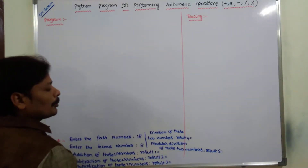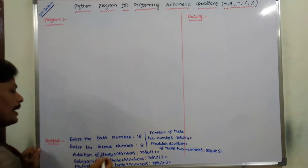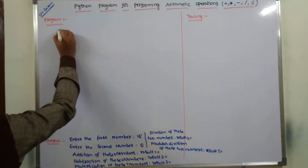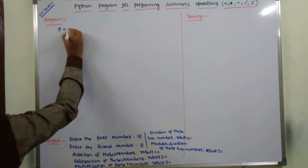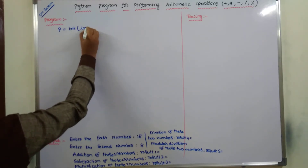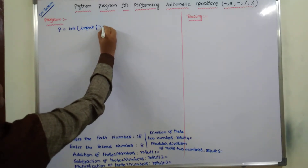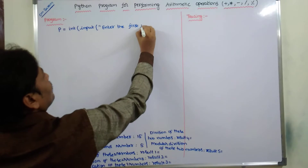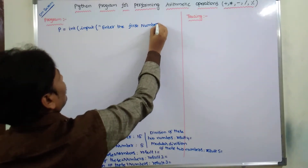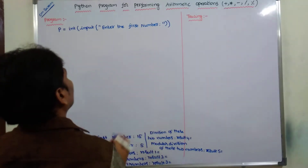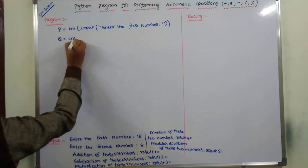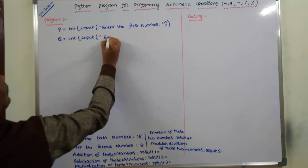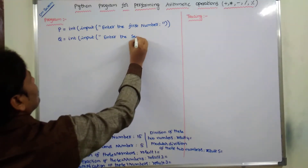Whenever I am tracing the program, I am writing the result. According to the output, we can go to the program. First, enter the first number — how are we giving input? P is equal to int of input of 'enter the first number.' Next, Q is equal to int of input of 'enter the second number.'